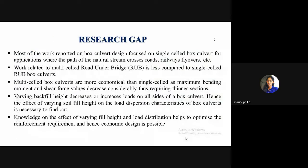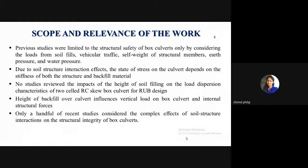Past research exists on box drains, box girders, and single-celled RUB box culverts, but multi-celled box culverts are more economical than single-celled ones as maximum bending moment and shear force values decrease considerably, requiring thinner sections. By varying the soil fill height, it helps design engineers determine the types of loadings acting on a box culvert with different fill heights. The height of backfill over the culvert influences the vertical load and internal structural forces, and no studies have reviewed the impacts of fill height on two-celled RC skew box culverts for RUB design.